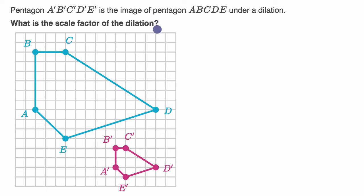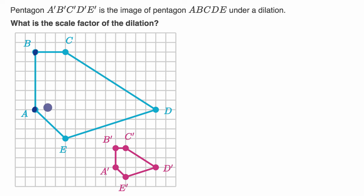They don't even tell us the center of the dilation, but in order to figure out the scale factor, you just have to realize that when you do a dilation, the distance between corresponding points will change according to the scale factor. For example, we could look at the distance between point A and point B. Our change in Y is our distance because we don't have a change in X, and that distance is six.